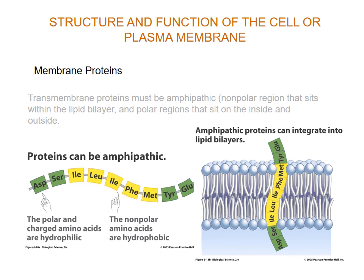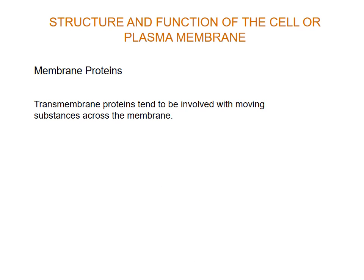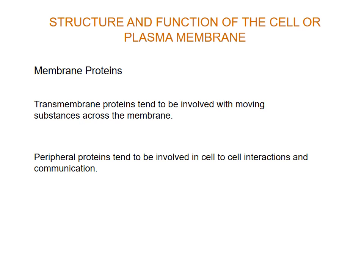These transmembrane proteins are very important for the overall permeability of the cell membrane — they're crucial in moving substances across the membrane. Think for a moment which substances those would be — would they be water? Probably not. Would they be glucose? Think about it. Peripheral proteins tend to be involved in communications between cells — how cells recognize each other, or talk to each other.